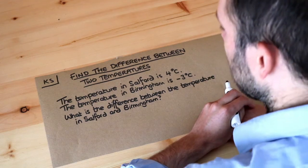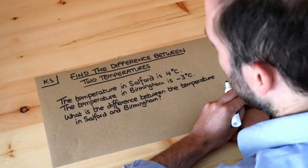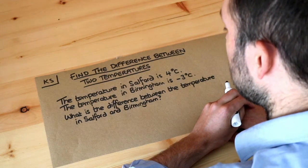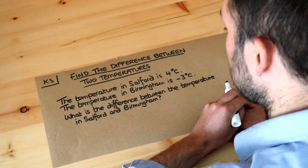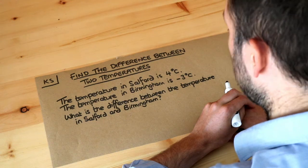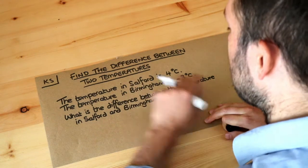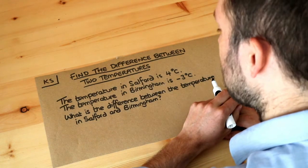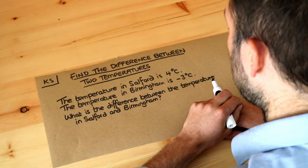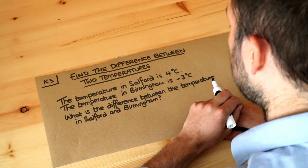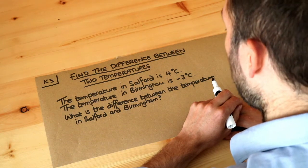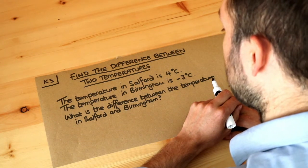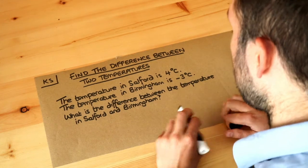Hello and welcome to this Dr. Ross Mass's key skill video on finding the difference between two temperatures. Let's read the question. The temperature in Southford is four degrees Celsius, the temperature in Birmingham is minus three Celsius. What is the difference between the temperature in Southford and Birmingham?